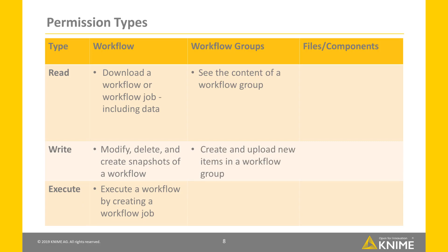Workflow groups. The read permissions for workflow groups control whether users see the content of the workflow group. This means whether users can see all of the subgroups and other items in the selected workflow group in the KNIME Explorer. If a user has write permissions for a workflow group, the user can create new items in this group, these being subgroups, workflows, data files and components.